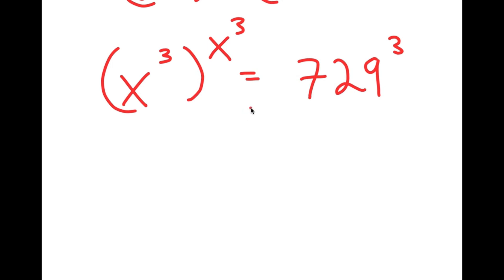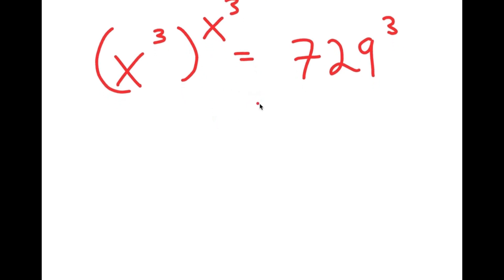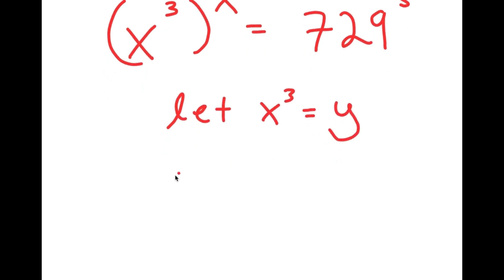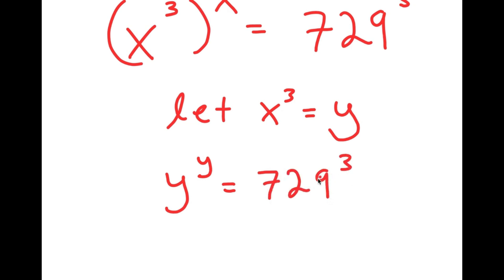So now from here, I'm going to let x to the power of 3 equal to the variable y. So I get y to the power of y is equal to 729 to the power of 3.